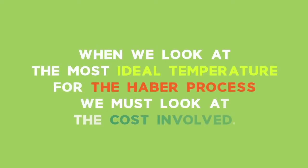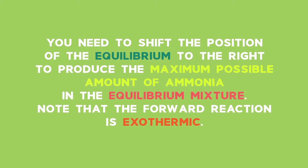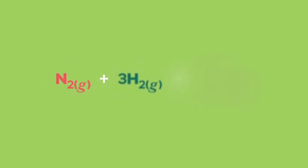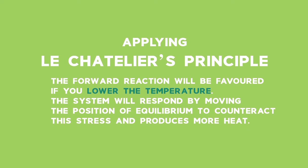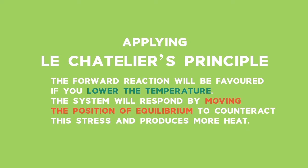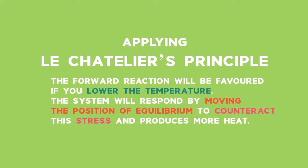When we look at the most ideal temperature for the Haber process, we must look at the cost involved. You need to shift the position of the equilibrium to the right to produce the maximum possible amount of ammonia in the equilibrium mixture. Note that the forward reaction is exothermic: N₂ gas plus 3H₂ gas reversibly goes to form 2NH₃ gas. Applying Le Chatelier's principle, the forward reaction will be favoured if you lower the temperature — the system will respond by moving the position of equilibrium to counteract this stress and produce more heat.